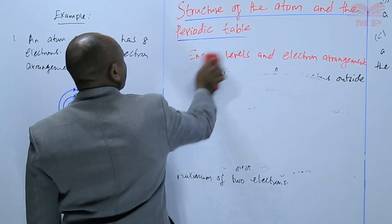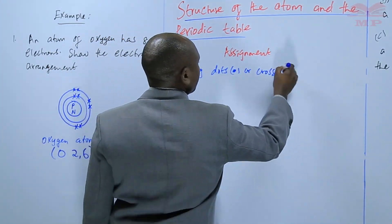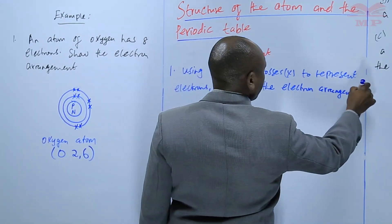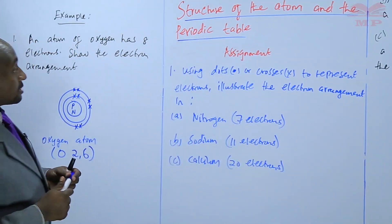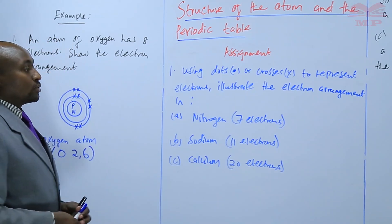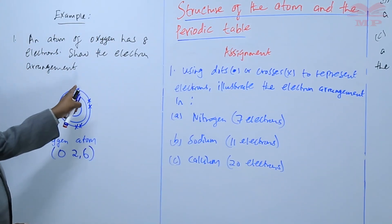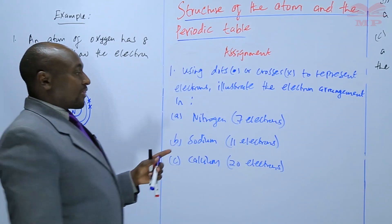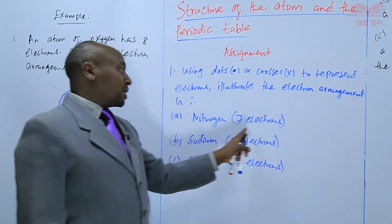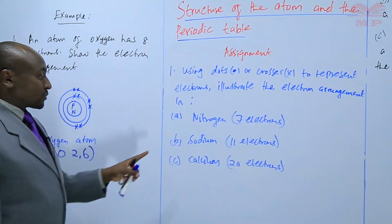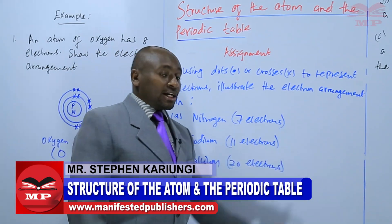Now for an assignment: using dots or crosses to represent electrons — we can use either — illustrate the electron arrangement in nitrogen with seven electrons, sodium with eleven electrons, and calcium with twenty electrons. Draw and show the arrangement for each.